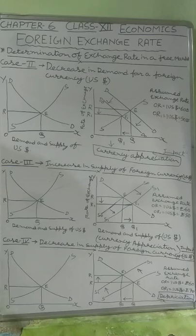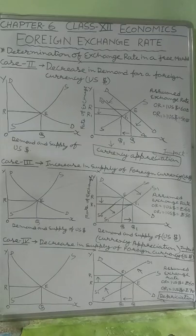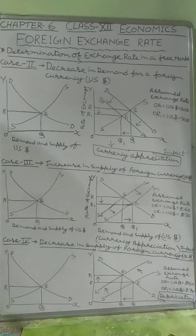But there may be some changes in demand or supply of foreign currency, and we have to see the exact impact of these changes on the exchange rate. These changes or impacts of change in demand and supply of foreign currency were separated into four parts. Case one — where there is an increase in demand for foreign currency, resulting in a depreciation of domestic currency in terms of foreign currency — was seen in the last video. In this video, the remaining three cases are going to be described.